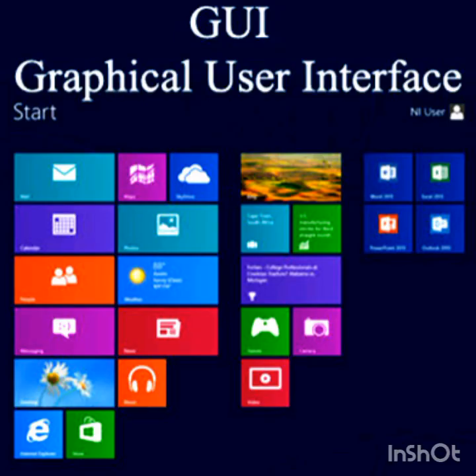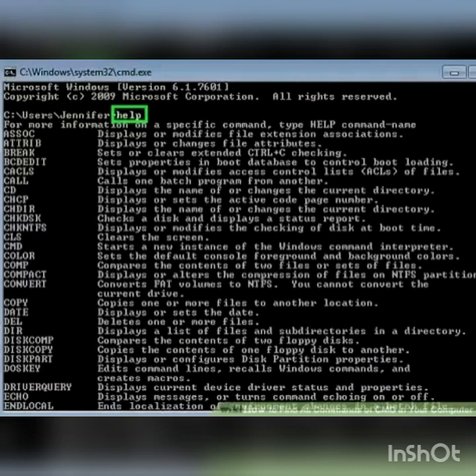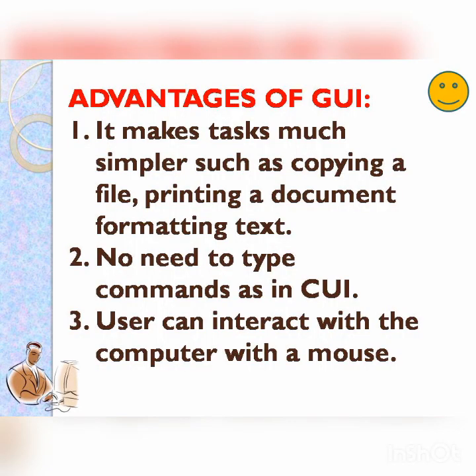Here is the GUI — you can see the menus and the icons. This one is CUI, command user interface or character user interface. The advantages of GUI: it makes tasks much simpler such as copying a file, printing a document, formatting text. There is no need to type commands as in CUI. The user can interact with the computer using a mouse.